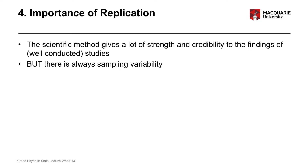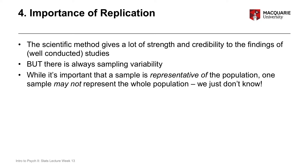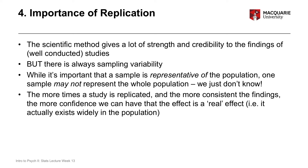Any one study is never going to be perfectly representative of a population. You can do as much as you can to try to make it representative, but you'll never actually know if it truly is representative. That's why it's really important that we conduct studies multiple times, with multiple samples under multiple conditions, to try to get a sense of what the average effect is. The more we do that, the more confidence we can have in what the real effect might be in the population.